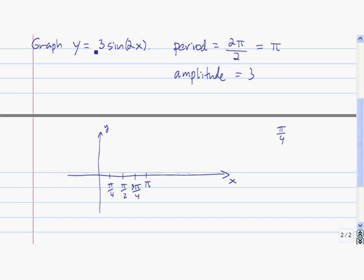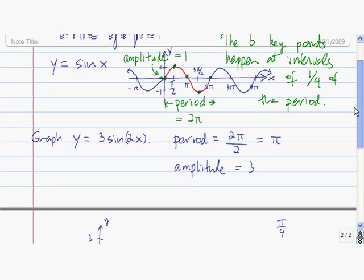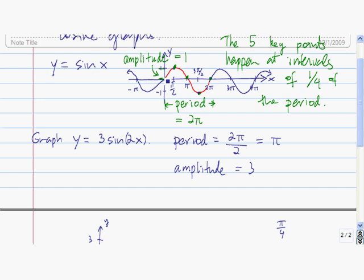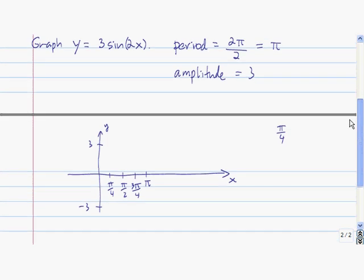Next, we mark off the amplitude. The amplitude is three, so the highest we're going to go is three and the lowest is negative three. Just like in y equals sine of x, we go from the x-axis to the max, back to the x-axis, to the min, back to the x-axis. At the beginning of the period we're at the origin, one-fourth of the way across we're at the max, halfway across we're at the x-axis, three-quarters of the way we're at the minimum, and at the end we're back on the x-axis. This is one full cycle of the graph of three sine of 2x.